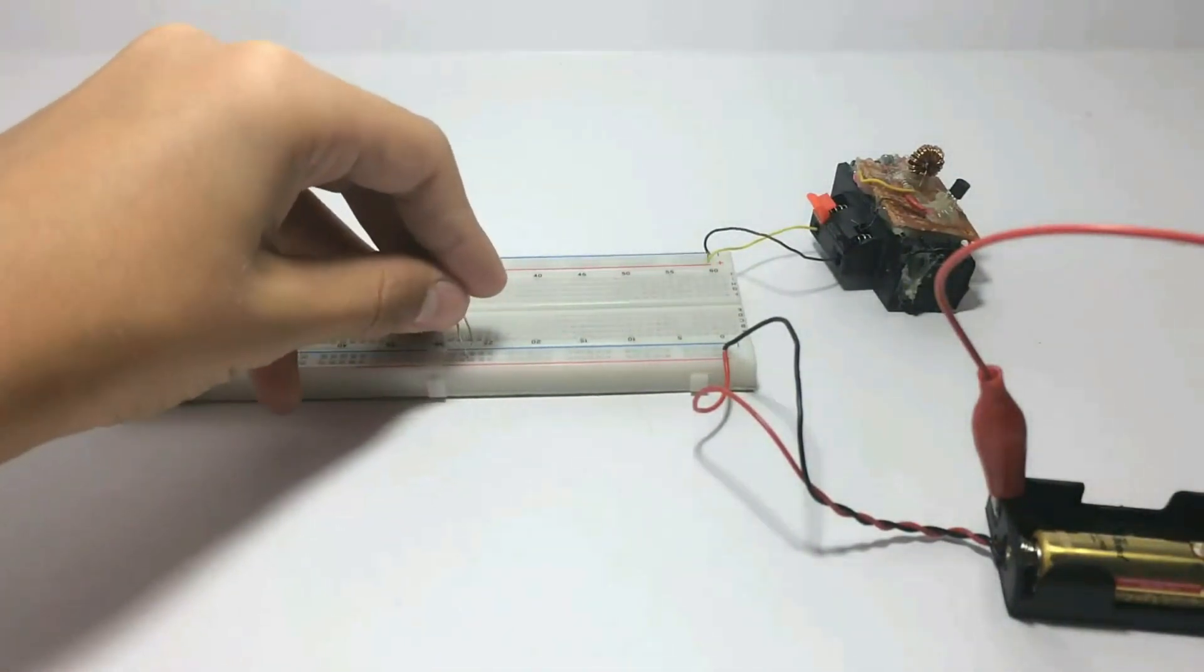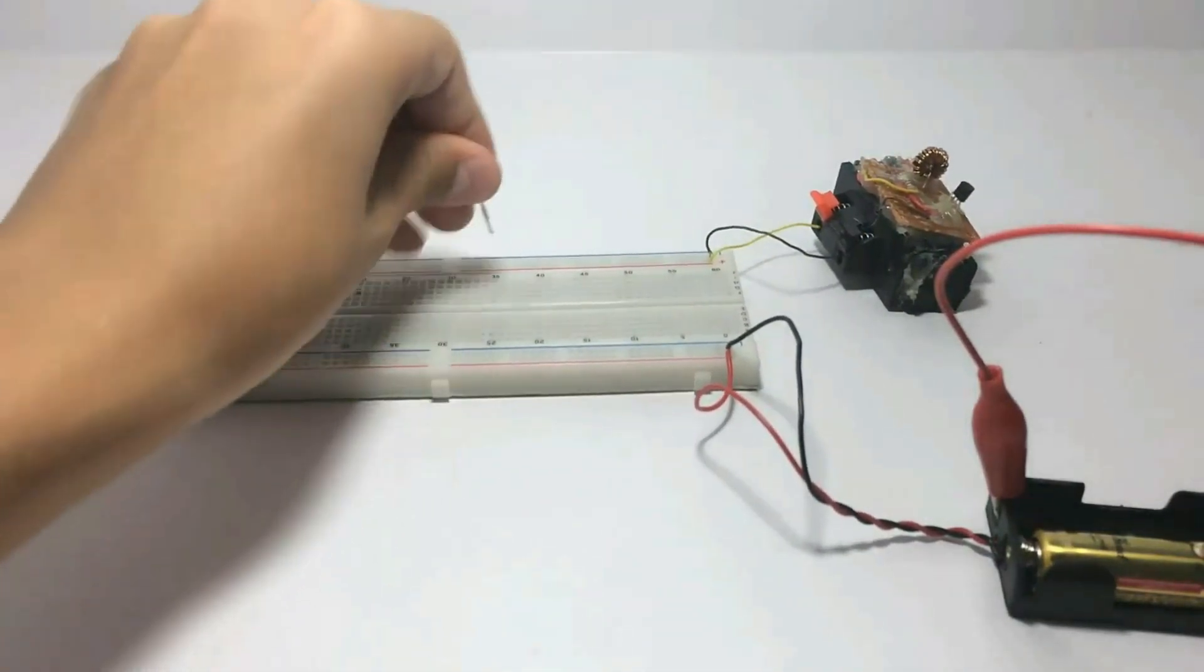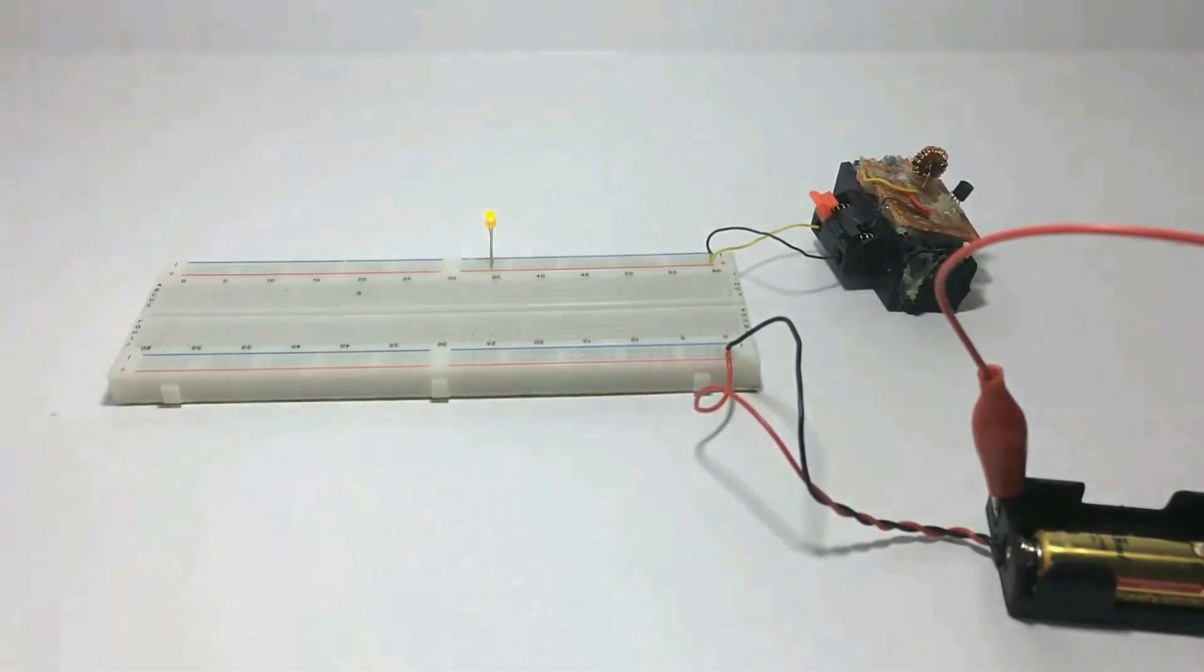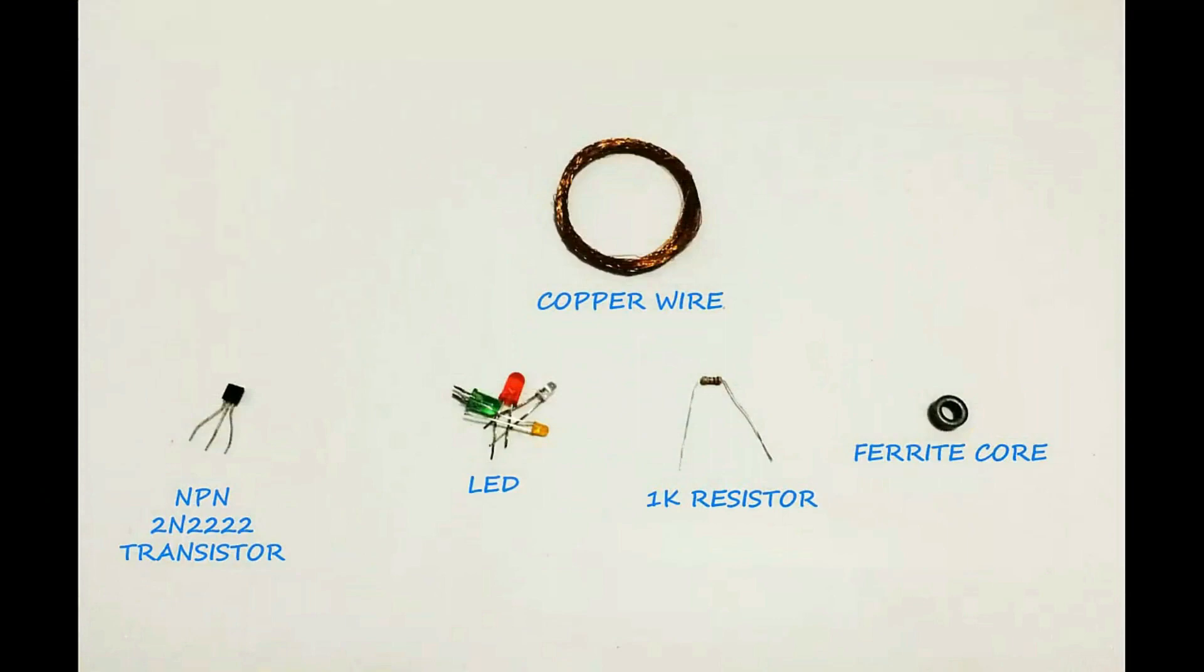But with the Joule Thief you can run an LED just with a 1.5 volt battery. The components are very simple: copper wire, a transistor with this code, some LEDs, a 1k resistor, and a ferrite core.